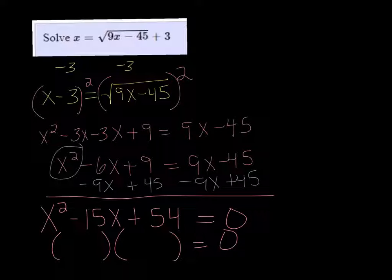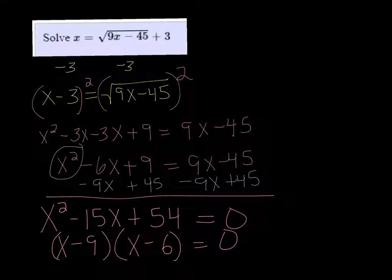So some factors of 54 are 9 and 6. So if we do x minus 9 and x minus 6, we'll get that negative 15 that we need. And that gives us the answers of x equals 9 or x equals 6.